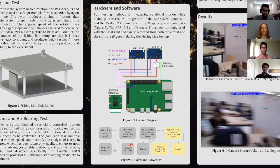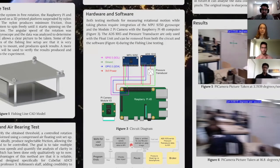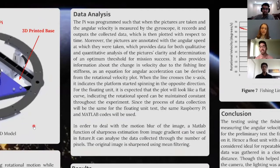So now, we will look at how we actually analyze the data that we get from this process. The Raspberry Pi is programmed such that when the pictures are taken, it annotates each photo with the angular speed at which it was taken, which provides data for both qualitative and quantitative analysis of the picture's quality and determination of an optimal threshold for mission success. The speed data collected is also saved and plotted with respect to time, which provides a visual representation of the change in velocity due to the fishing line's rotation or stiffness, as an equation for angular acceleration can be derived from the plot. In the case of the suspended platform, the curve has a negative slope since the speed decreases as torsion is applied to the line. For the floating unit case, it's expected that the curve will look flat, as the speed will ideally be maintained constant throughout the process. Since the process of data collection will be the same for the floating unit test, the same Raspberry Pi and MATLAB codes will be used.